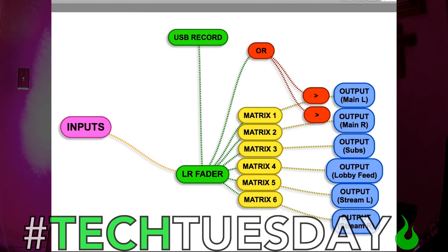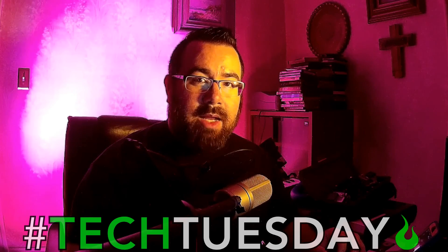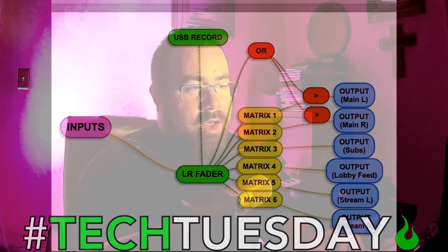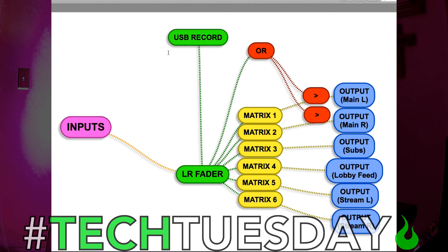A very typical setup for me is to have a main left and right output for the speakers producing highs, a subs output for low end, a lobby feed for a parent's room or lobby with a TV setup. The same level and tone isn't necessarily going to work for both your main left-right and your lobby feed. And then we've got our stream feeds — anything going to a camera, live podcast, Ustream, or similar. On some consoles you'll also have a USB recording, which feeds off the left and right fader, so anything you do to that fader will affect all these things.